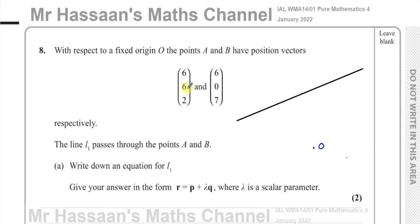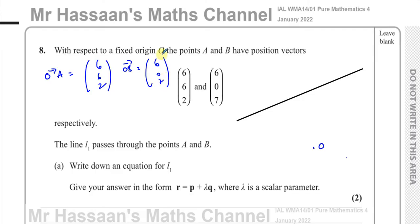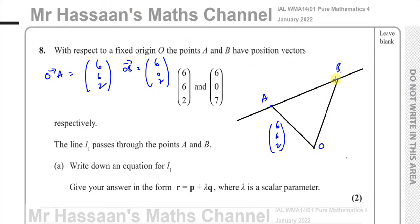Here we have the position vectors of two points, A and B. The vector from O to A is (6, 6, 2) and the vector from O to B is (6, 0, 7). So let's say this is point A — we know the vector from O to A is (6, 6, 2). And let's say this is point B — so the vector from O to B is (6, 0, 7).